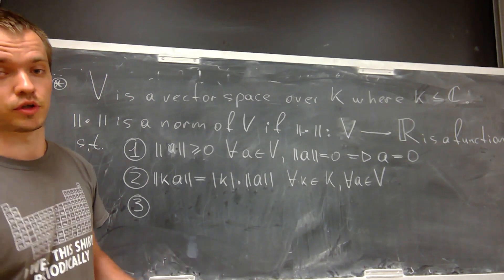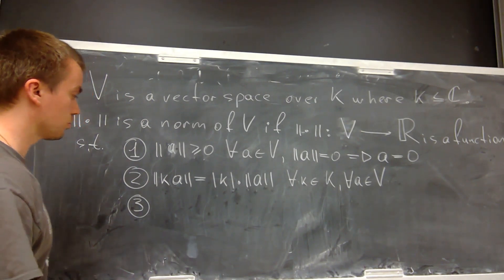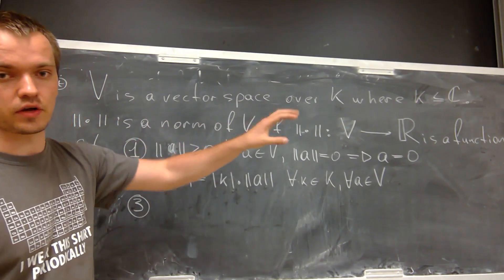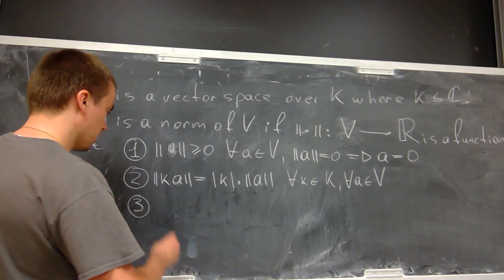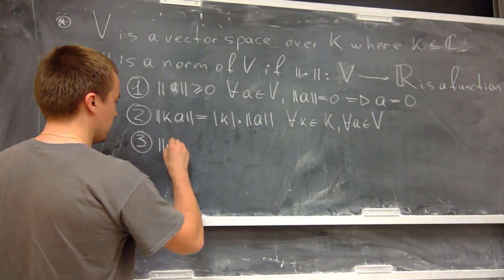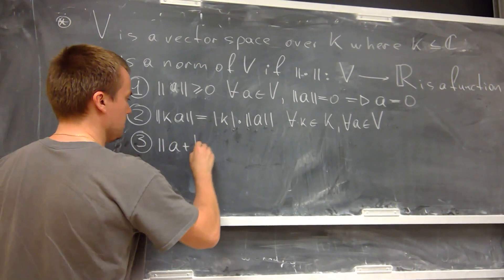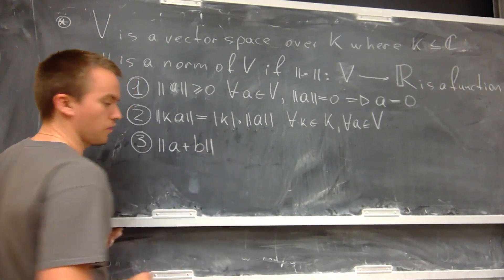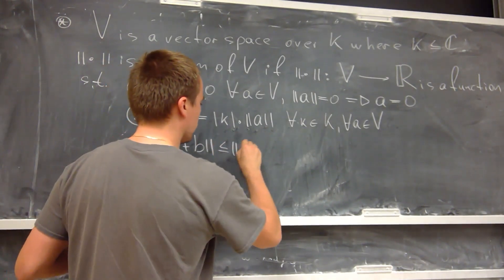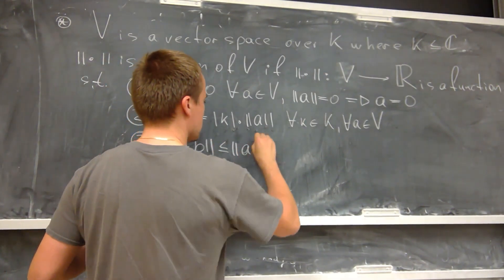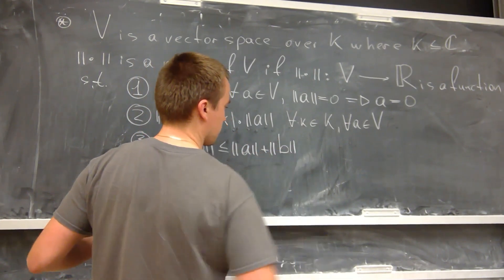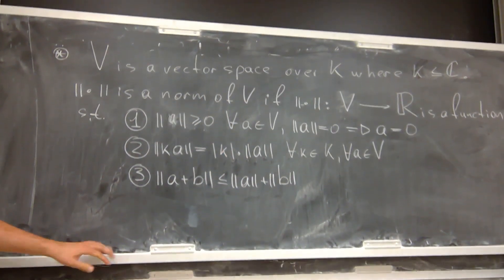The next property is the most important one. I want my norm to satisfy the triangle inequality. In other words, I want the norm of A plus B — the sum of any two elements — to be less than or equal to norm(A) plus norm(B).